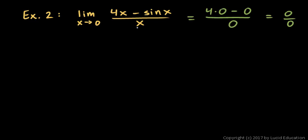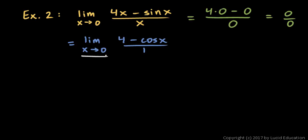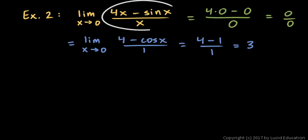Nor can we just cancel out the x. L'Hôpital's rule says this limit equals the limit as x approaches 0 of the derivative of the numerator over the derivative of the denominator. The derivative of the numerator, term by term, is 4 minus cosine of x, over the derivative of the denominator, which is 1. Substituting x = 0 gives 4 minus cosine(0), which is 1, over 1 — so 4 minus 1 equals 3. The limit is 3.